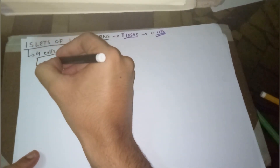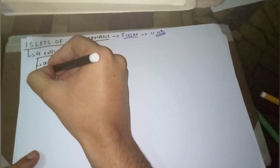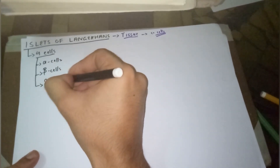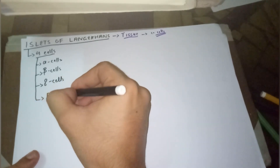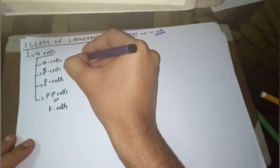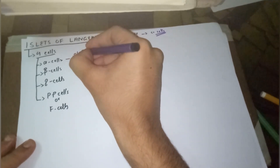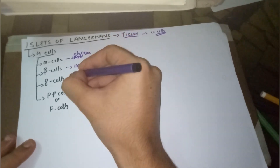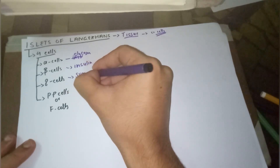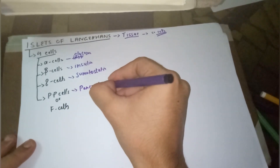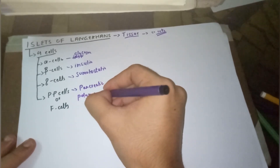The four cell types are: number one, alpha cells; number two, beta cells; number three, delta cells; and number four, PP cells, also called F cells. Alpha cells secrete glucagon, beta cells secrete insulin, delta cells secrete somatostatin, and PP cells secrete pancreatic polypeptide.